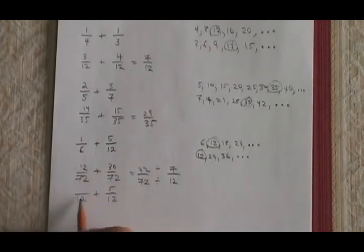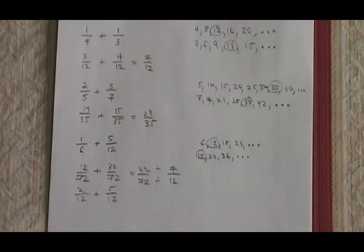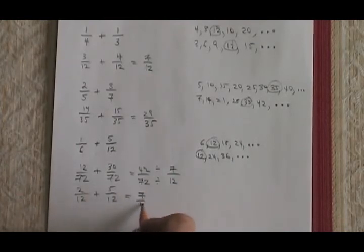The first one, 6 times 2 is 12, and 1 times 2 is 2. 1 sixth expands to 2 twelfths. 2 twelfths plus 5 twelfths is equal to 7 twelfths. That's my answer. It's the same answer I got with the shortcut method.